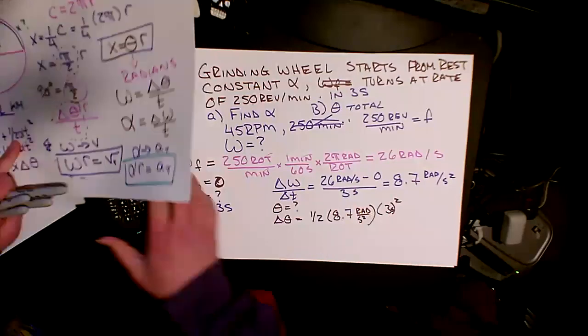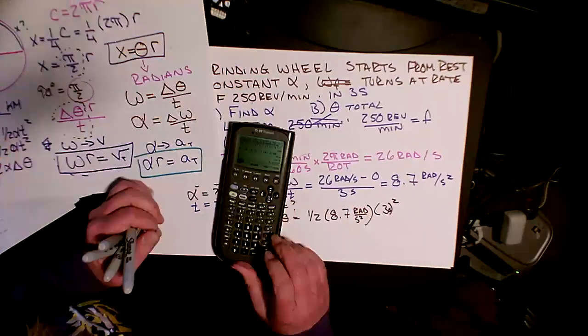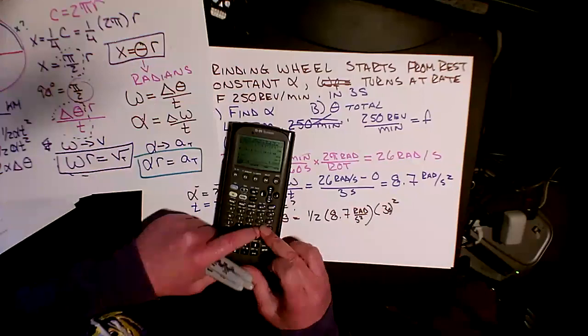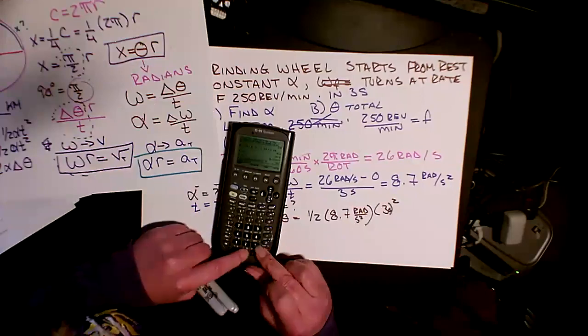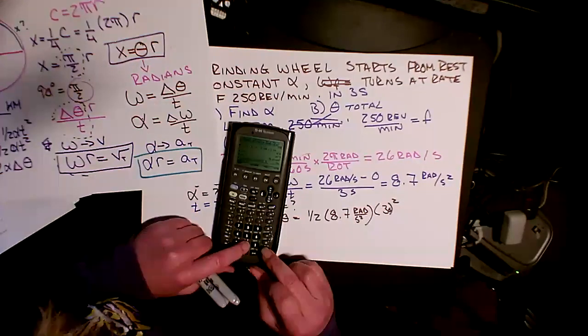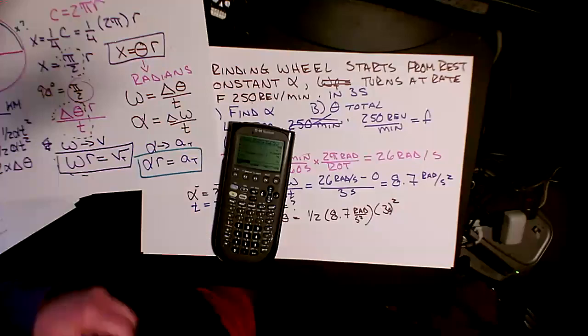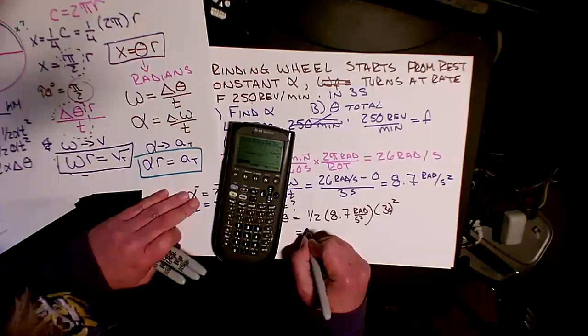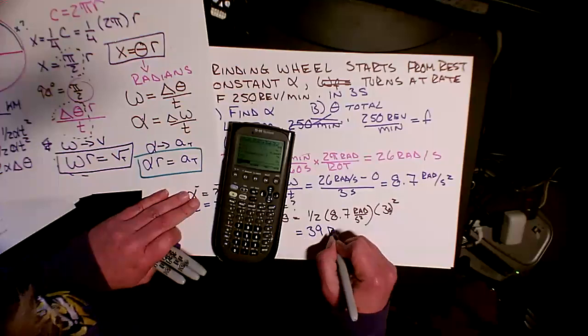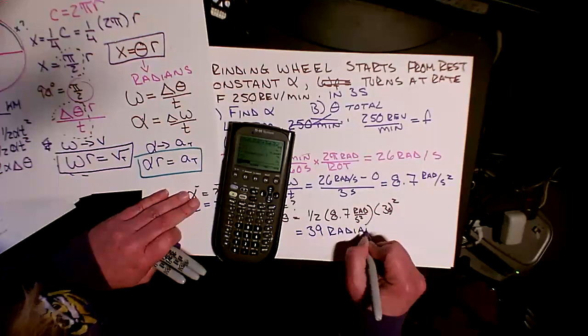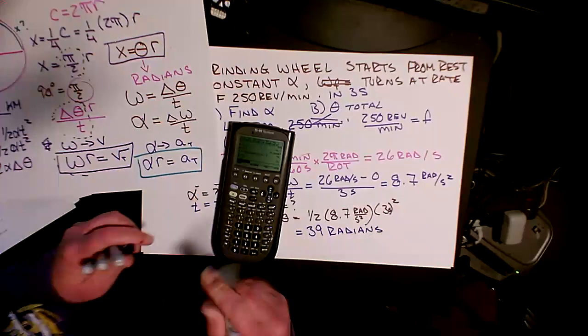So let's punch that out. And my 8.7 times 9 divided by 2, divided by 2, gives me 39 radians. And here we go.